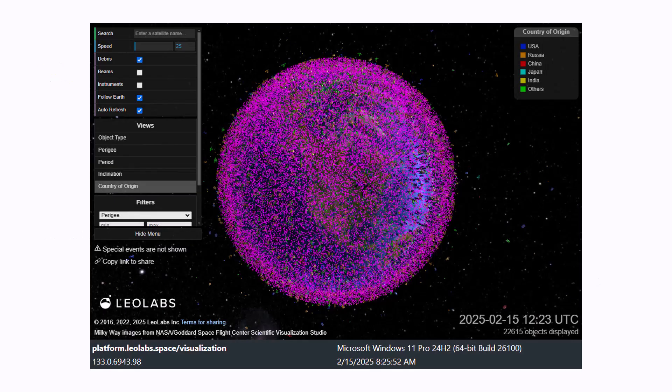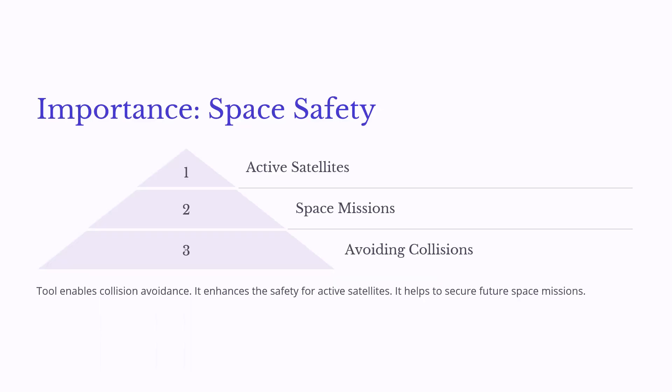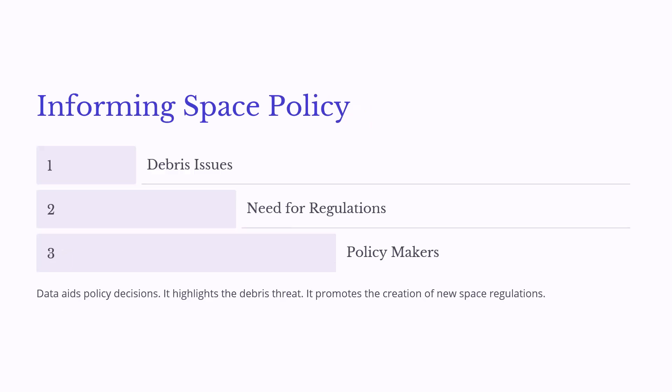We can see the debris as well as all the satellites in the sky. The importance is space safety — we see active satellites, space missions, and how to avoid collisions. The tool enables collision avoidance, enhances safety for active satellites, and helps secure future space missions. Regarding space policy, debris issues highlight the need for regulation, and the data aids policy decisions — it highlights the debris threat and promotes the creation of new space regulations.